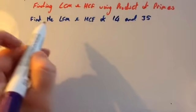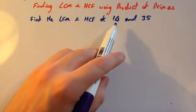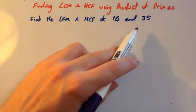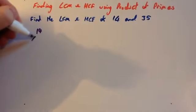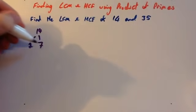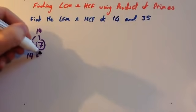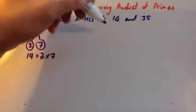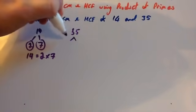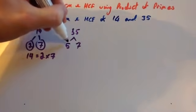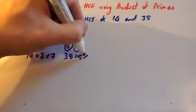To find the LCM and the HCF of 14 and 35, first of all you want to find what 14 and 35 are as a product of primes. So 14 — well, 2 times 7 is 14, and 2 is prime and 7 is prime. So 14 equals 2 times 7. And 35 — well, 35 is 5 times 7, and they're both prime as well. So 35 equals 5 times 7.